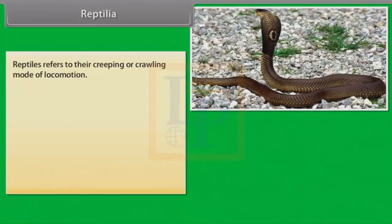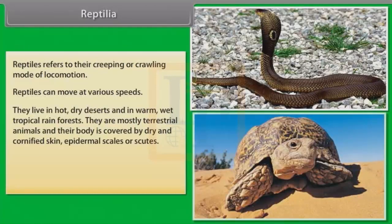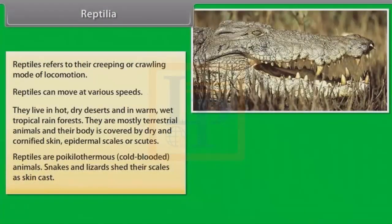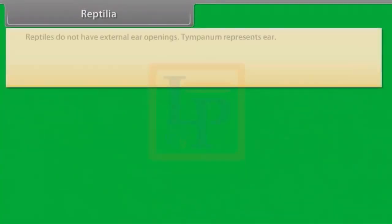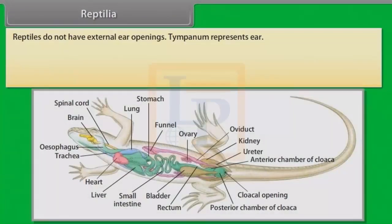Reptiles refer to their creeping or crawling mode of locomotion. Reptiles can move at various speeds. They live in hot dry deserts and in warm, wet tropical rainforests. They are mostly terrestrial animals and their body is covered by dry and cornified skin, epidermal scales or scutes. Reptiles are poikilothermous or cold-blooded animals. Snakes and lizards shed their scales as skin cast. Reptiles do not have external ear openings.